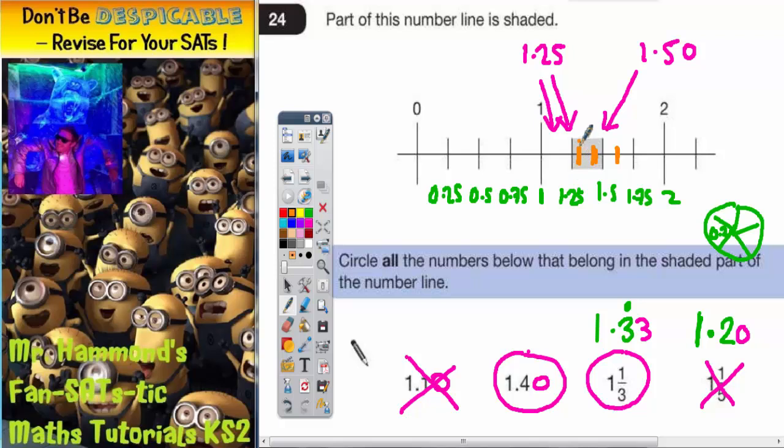Those two in the centre would lie in the grey shaded part of the number line.